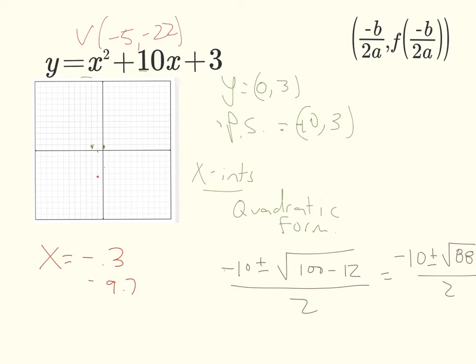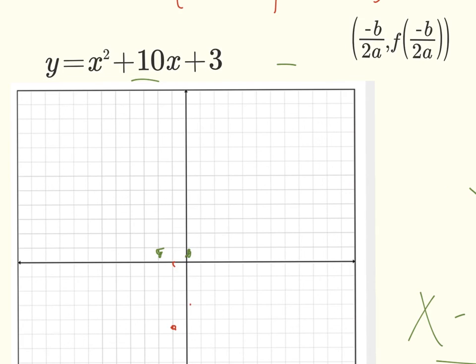All right, so our X's, all right, so our two X intercepts, we said, is negative 0.3 and 0 and negative 9.7. So those are our two X intercepts. So let's put those in our graph. And I'm just going to kind of ballpark this here. That should be right around there, the negative 9.7, and then the 0.3 should be right around there.